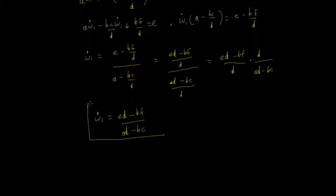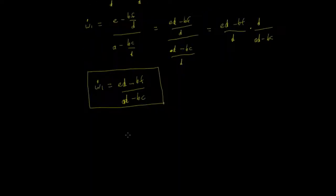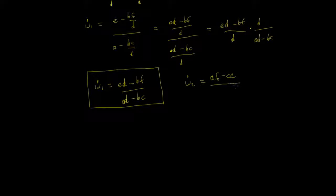That gives us omega1_dot. For omega2_dot, following the same algebra gives: omega2_dot = (AF - CE) / (AD - BC).